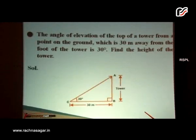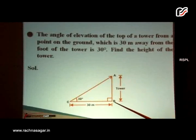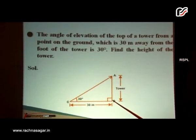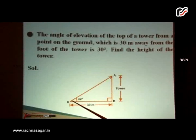Let us say AB is the tower. C is the point at a distance of 30 meters from the foot of the tower, that is from B. From C, the angle of elevation of the top of the tower is 30 degrees.